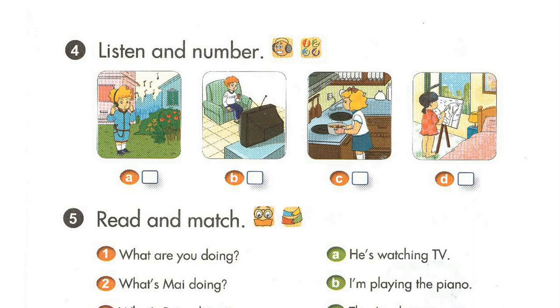2. Where's Mai? She's in her bedroom. What's she doing? She's drawing a picture.